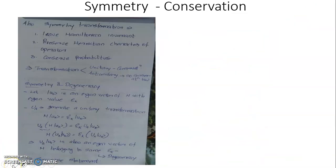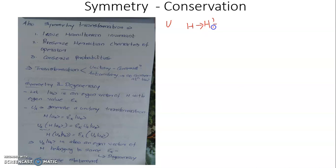Besides leaving the Hamiltonian invariant, a symmetry transformation gives rise to two more properties. The first property, which we have already seen, is that it leaves the Hamiltonian invariant. That is, if U is a unitary operator accounting for a symmetry transformation, then H changes to H prime, given by H prime equal to U H U dagger equal to U dagger H U. If this equals H itself, then this unitary transformation is referred to as a symmetry transformation.